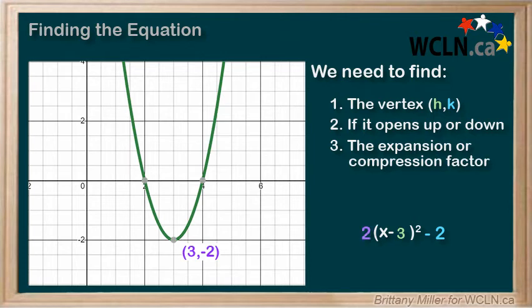So, the equation of the mystery parabola is 2(x - 3)² - 2.